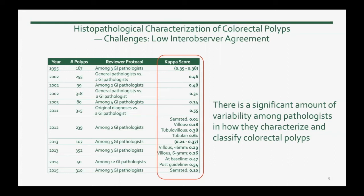I did a literature review and found studies that focus on characterizing the difficulty of this task. You can see the years of these studies, the number of polyps, and the number of pathologists involved. In the last column, you can see the Kappa score, which is the degree of agreement between pathologists in reading these polyps. As you can see, the Kappa score is mostly in the fair or poor range, so there is a significant amount of variability among pathologists in reading and characterizing colorectal polyp slides.